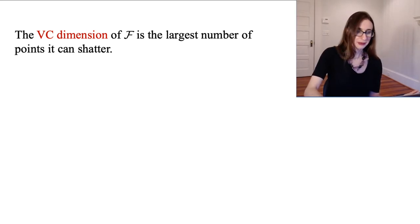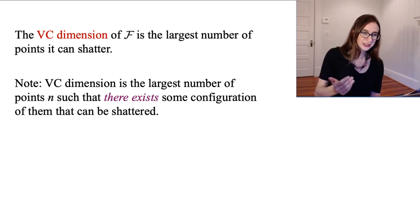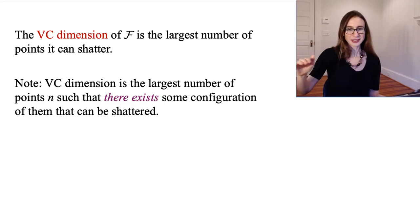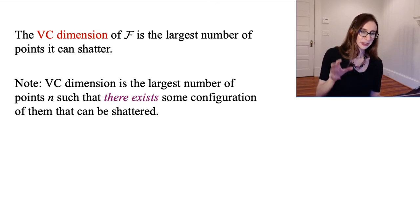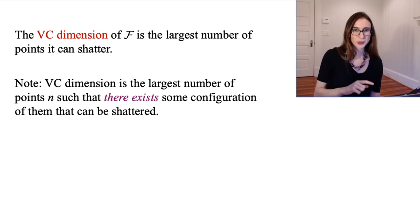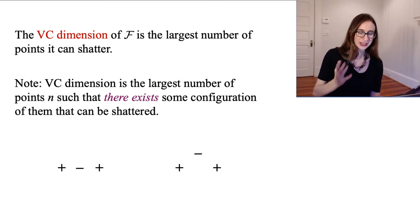There's something people often get wrong about VC dimension. The VC dimension is the largest number of points such that there exists some configuration of them that can be shattered — not every configuration needs to be shattered, just one of them. So if you make points collinear, you can't shatter them in two dimensions with three or more, but that says nothing about VC dimension. If you put data points on top of each other you can't shatter them, but again that says nothing about VC dimension. Only a configuration where you can shatter them matters.